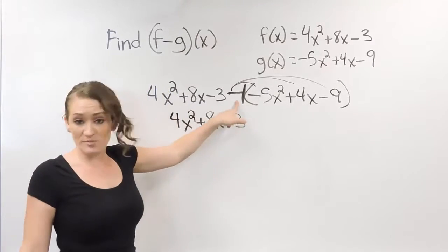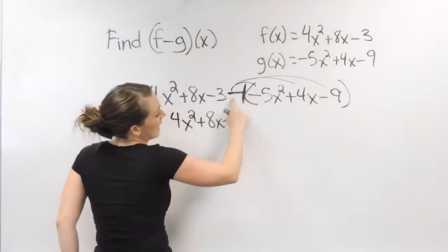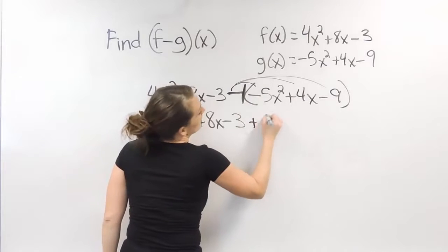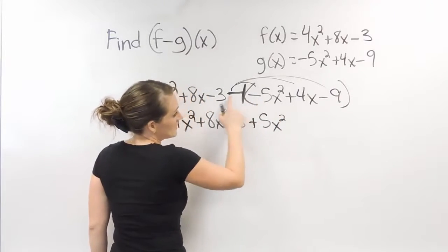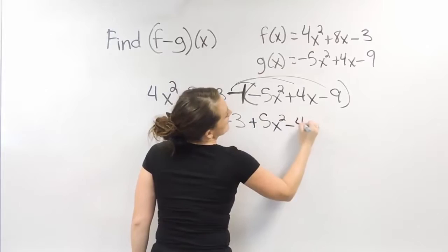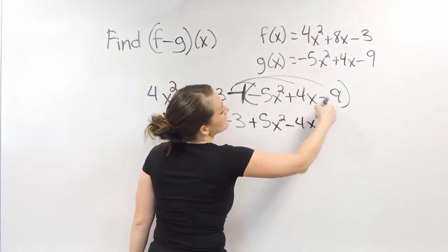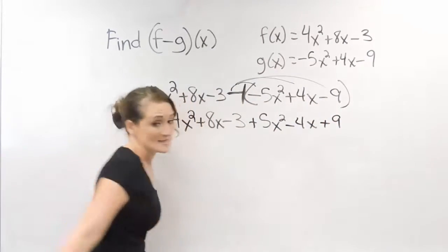But we need to distribute this negative sign. So negative negative 5x² is going to make it a positive 5x². Negative 4x, and then negative negative 9 makes that a positive 9.